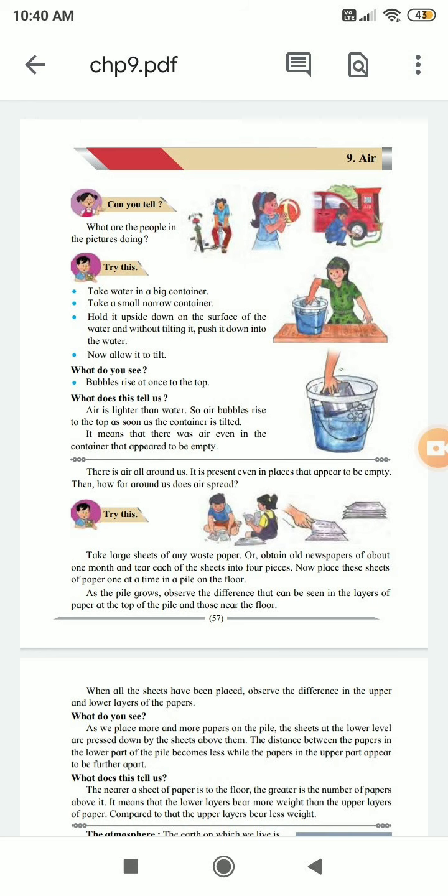When all the sheets have been placed, observe the difference in the upper and lower layers of the papers. What do you see? As we place more and more papers on the pile, the sheets of the lower level are pressed down by the sheets above them. The difference between the papers in the lower part of the pile becomes less while the papers in the upper part appear to be further apart.